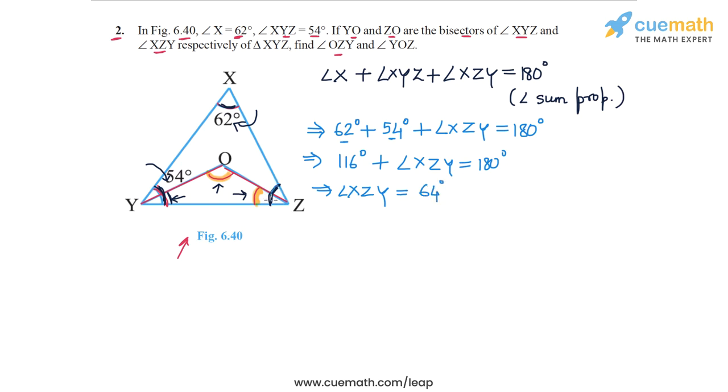So this angle, angle XZY is 64 degrees. Now let's find in triangle OYZ, the smaller triangle. And let's actually highlight that triangle just so that it's easy to observe. Angle OYZ, this is the triangle that we're going to consider now. In this triangle, angle OYZ is half of OYZ, this angle is half of 54 degrees. So this is equal to 27 degrees.